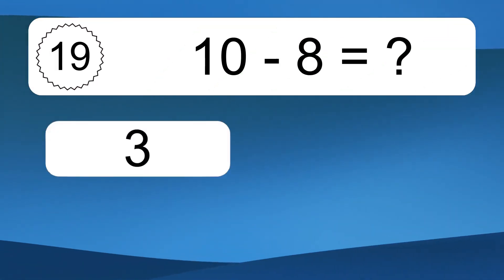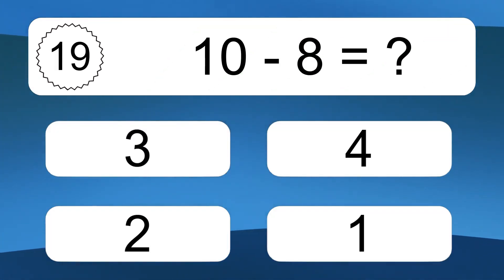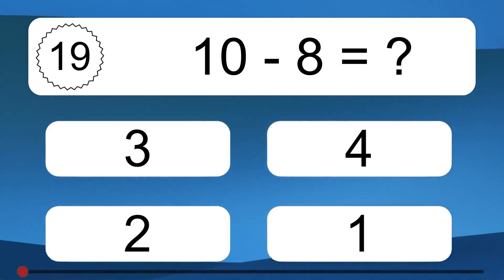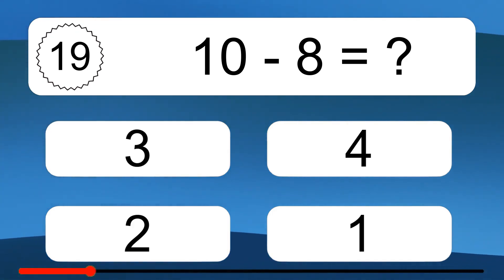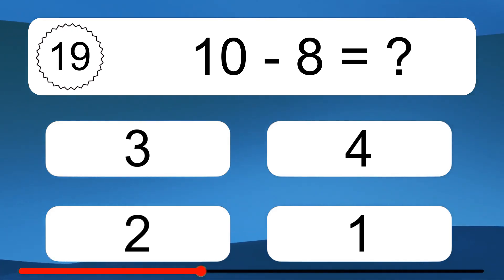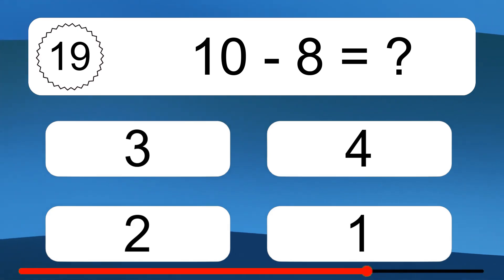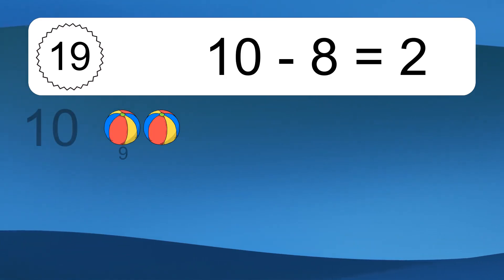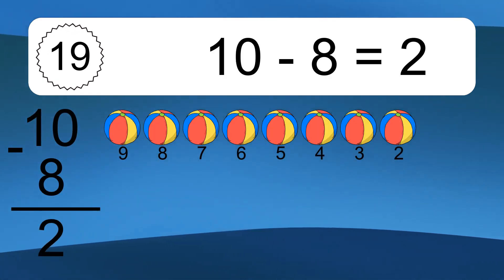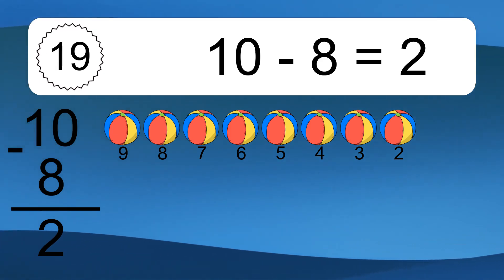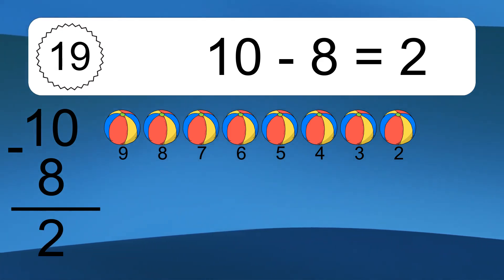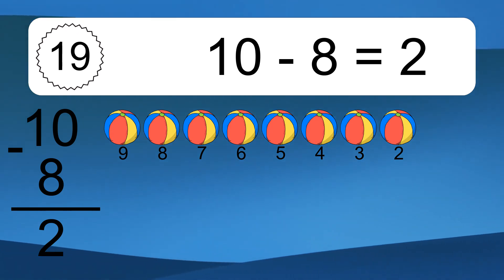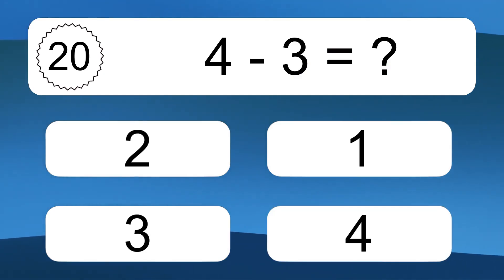10 minus 8 equals what? 10 minus 8 equals 2. Let's count it: 9, 8, 7, 6, 5, 4, 3, 2. 4 minus 3 equals what?